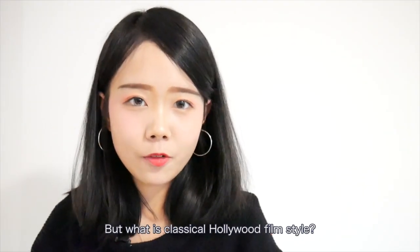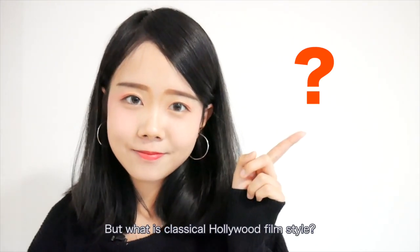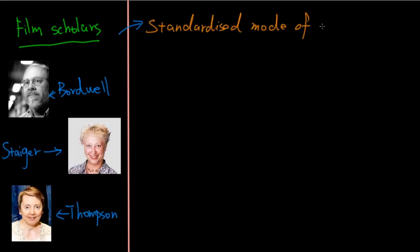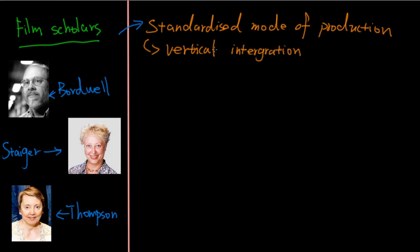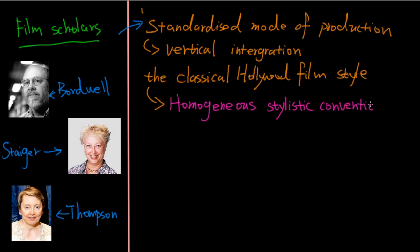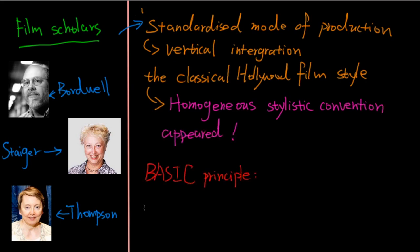But what is classic Hollywood film style? As famous film scholars Bordwell, Staiger, and Thompson state, in addition to the standardized mode of production like vertical integration, the classical Hollywood film style — a term that indicates the homogeneous stylistic convention — also appeared. The basic principle of classical film style is that every stylistic device serves storytelling.